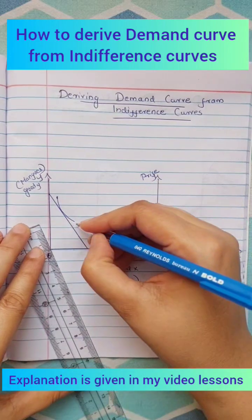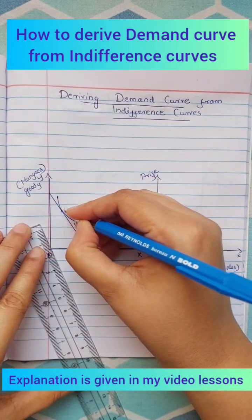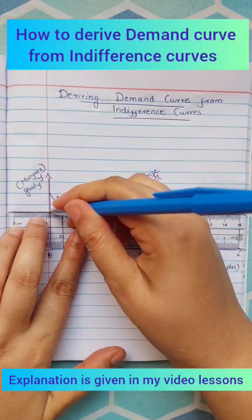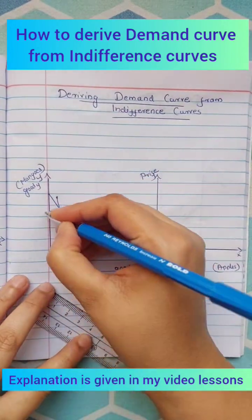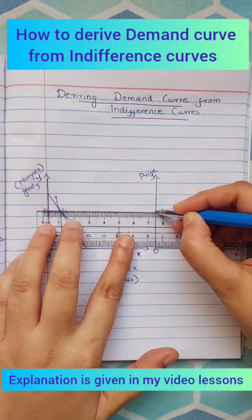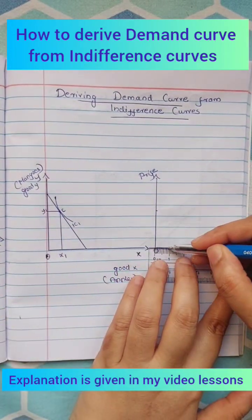Draw the budget line and indifference curve IC1. The consumer will be in equilibrium at point C, where she buys x1 quantities of apples and y1 quantities of mangoes. In figure 2,